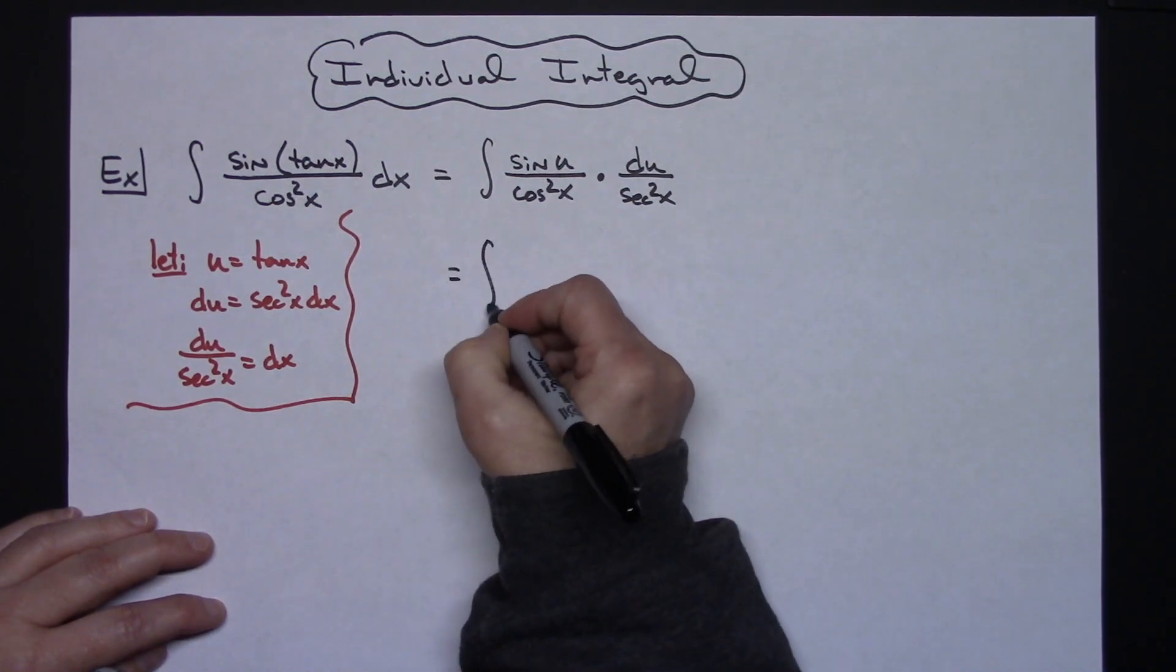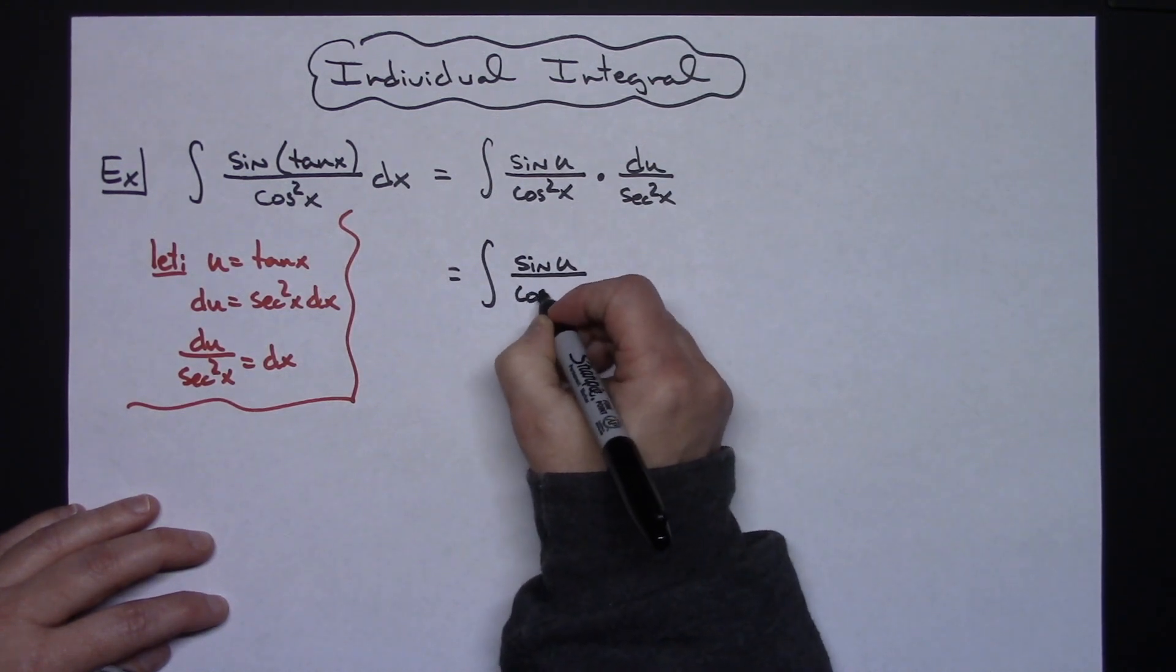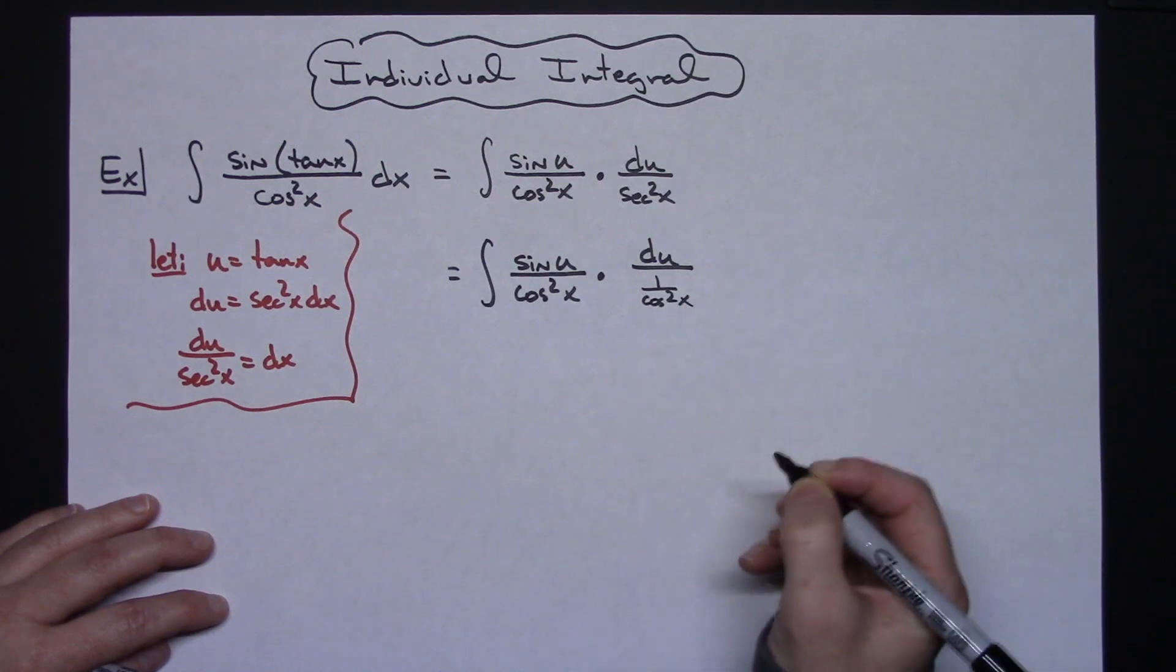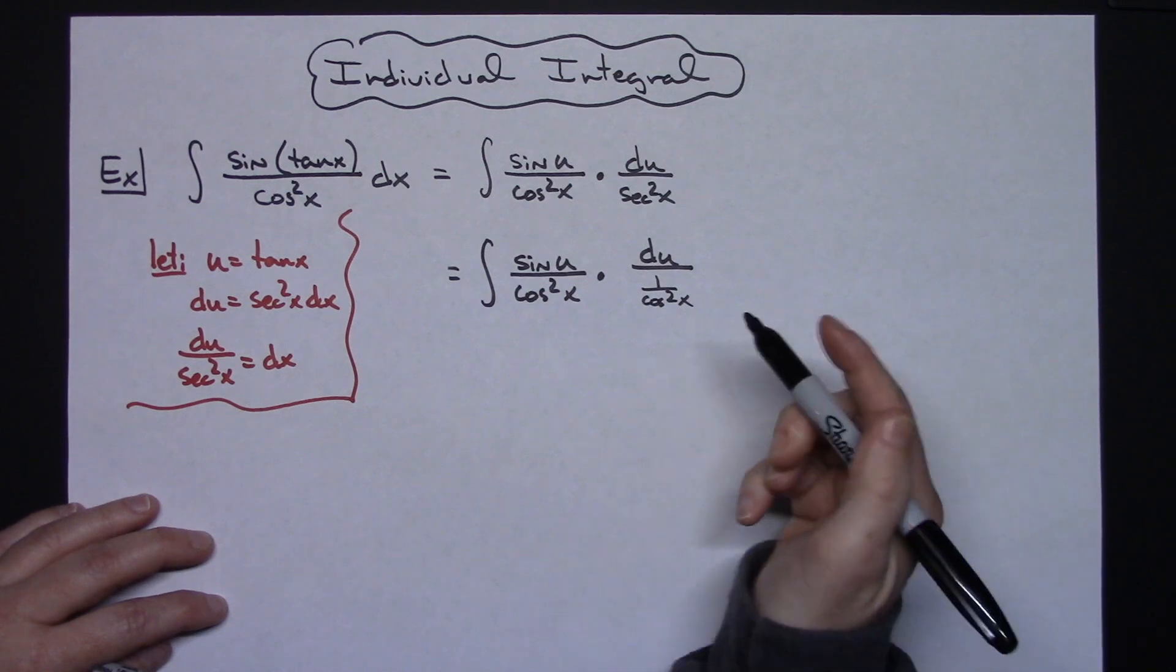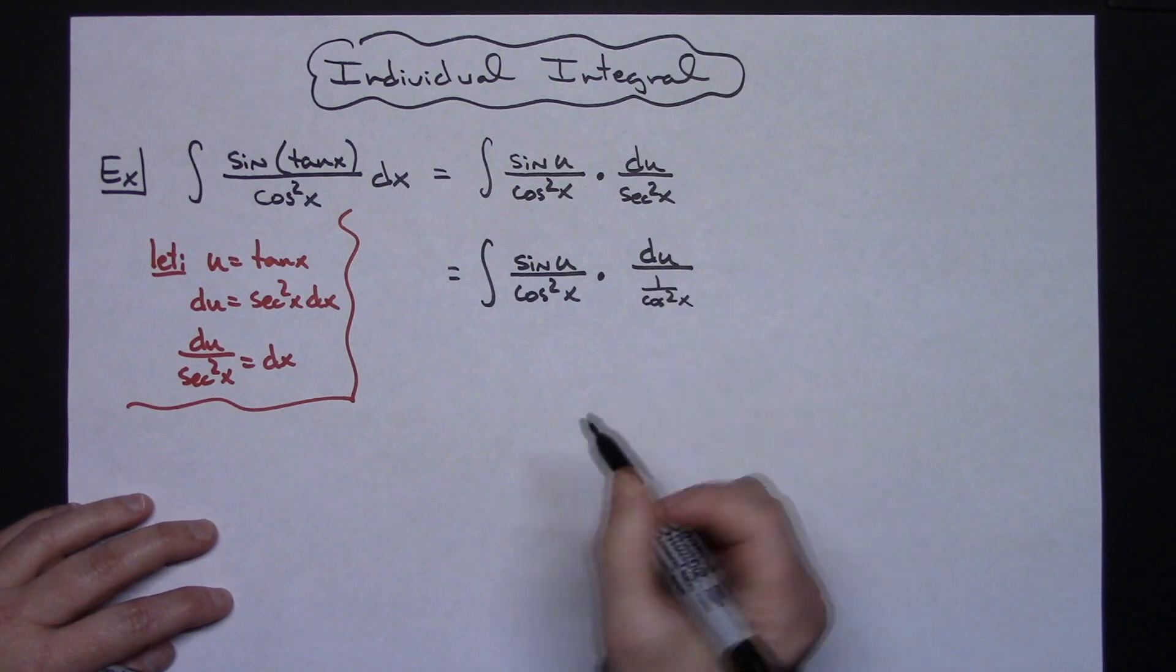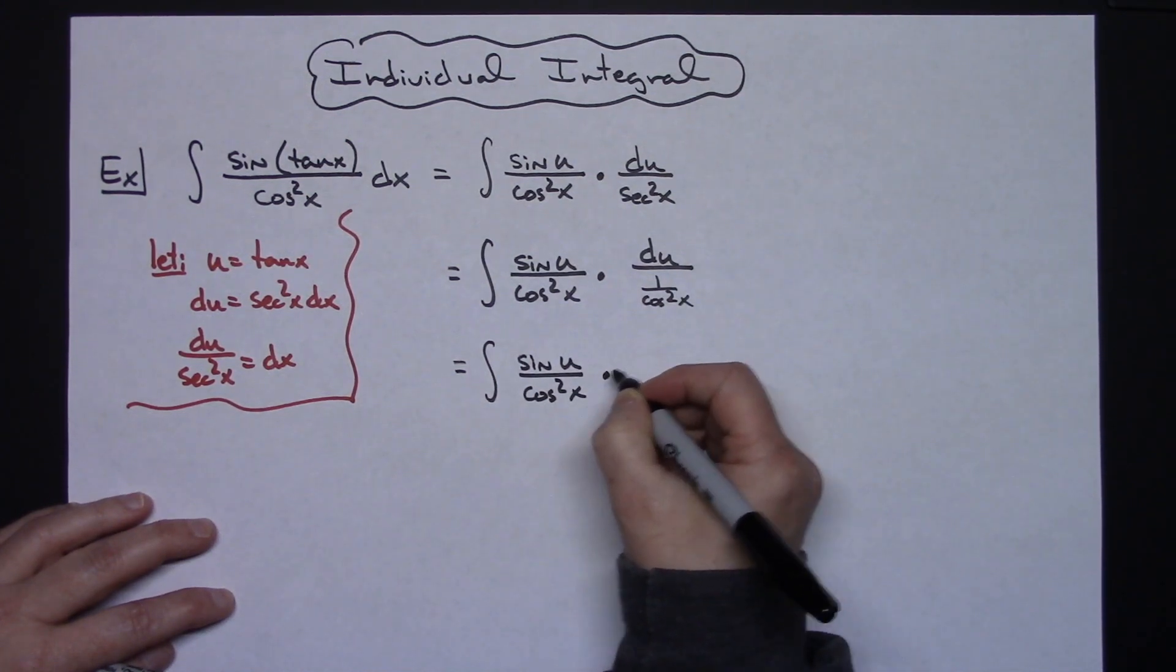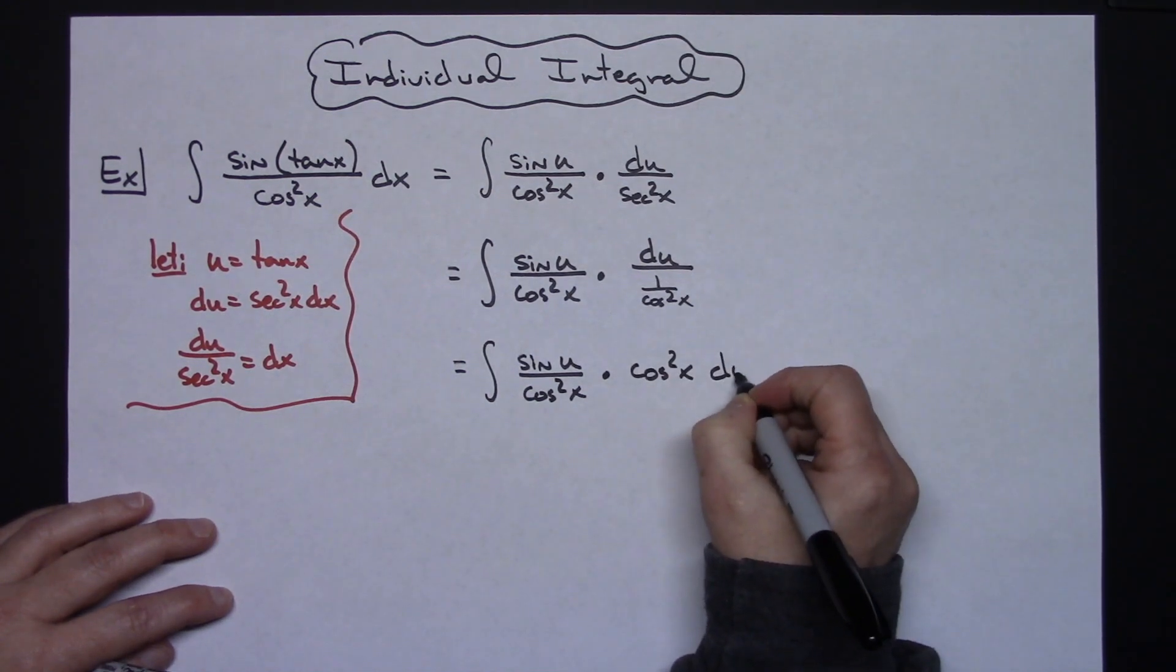We'll have the integral of sine u all over cosine squared x times du. Replacing that with that reciprocal identity, I'm going to have 1 over cosine squared x. Now that creates a complex fraction there. I'm just doing it for those people that might need to see the algebra steps. I can multiply through by the cosine squared of x. We'll have the integral of sine u over cosine squared x times just a plain cosine squared x and then with our du.